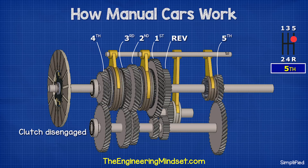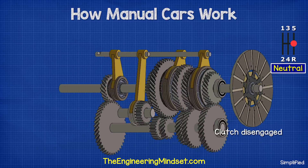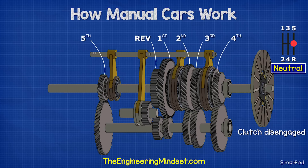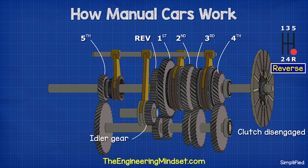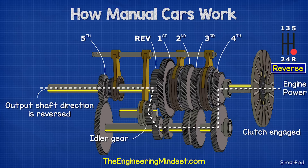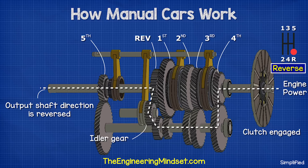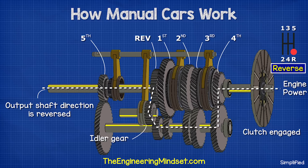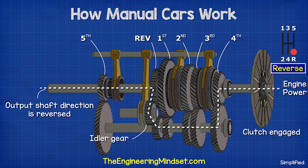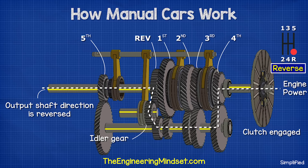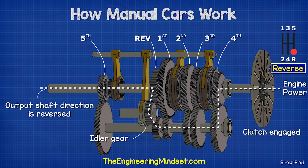For reverse, we bring the car to a complete stop and disengage the clutch. All of the shafts and gears come to a stop. We then slide the idler spur gear between the counter and the output gears. Then we re-engage the clutch to reverse the direction of the output shaft. So this is how we use the engine to propel the car along and use gears to go faster.